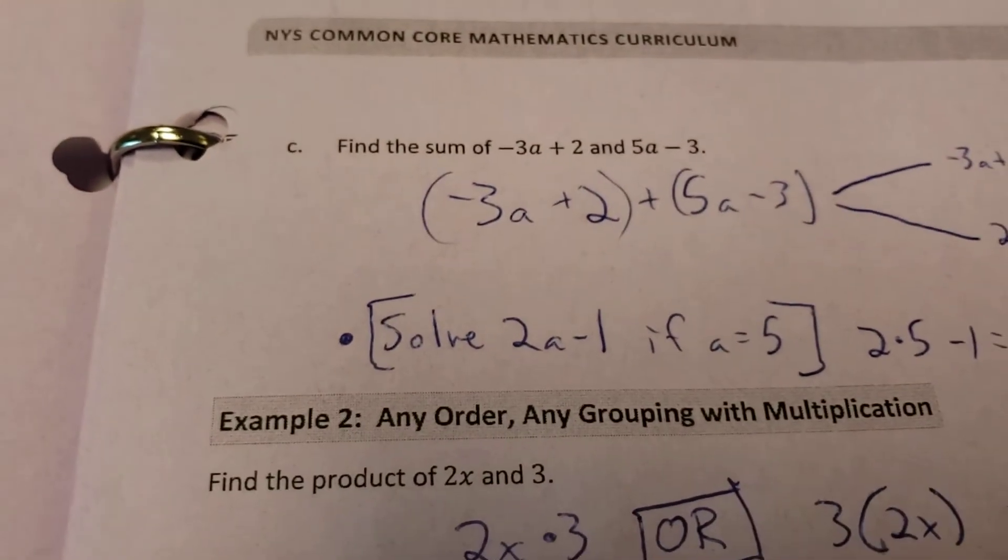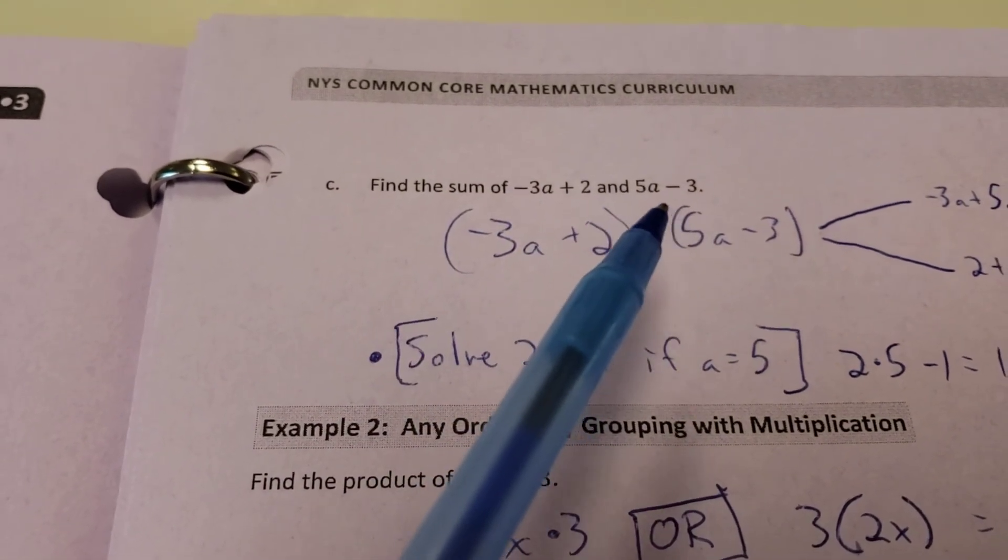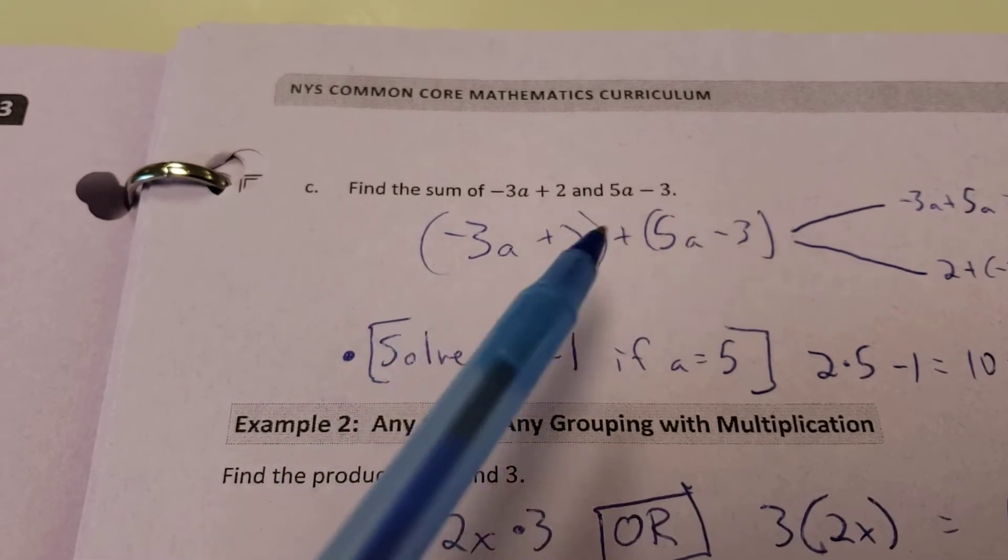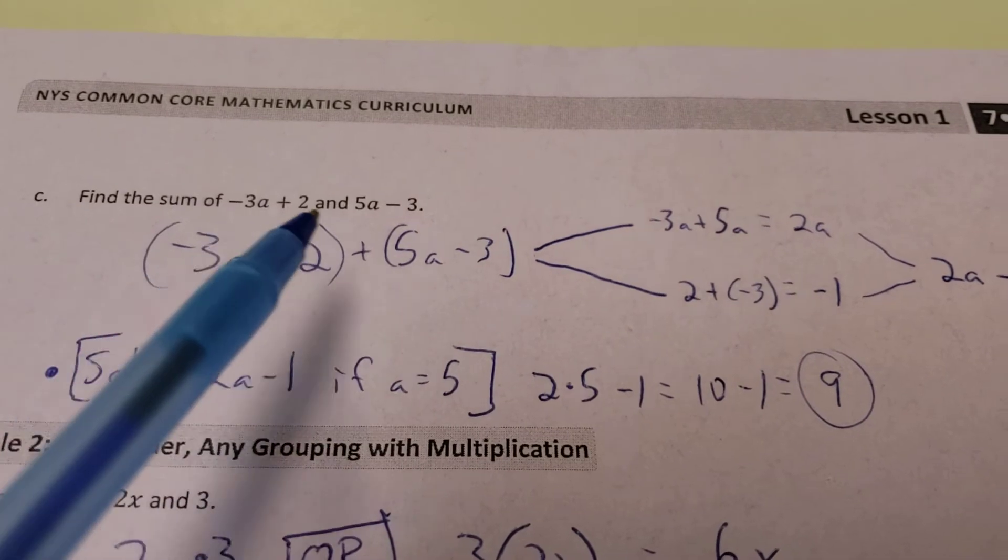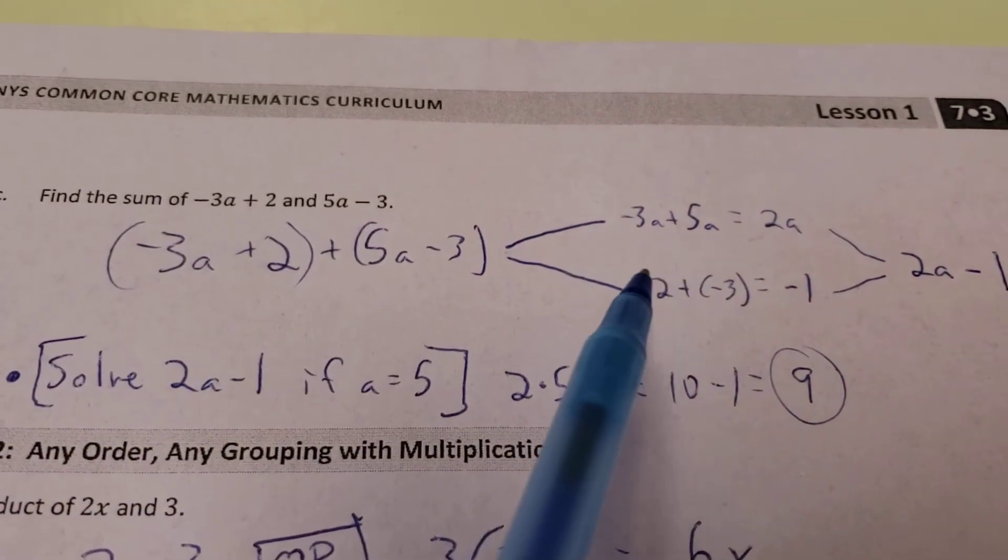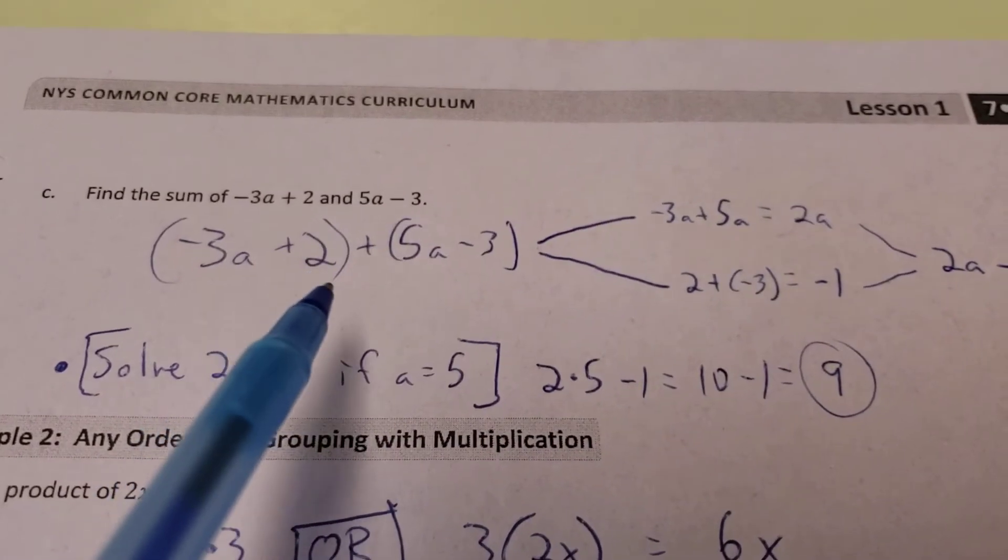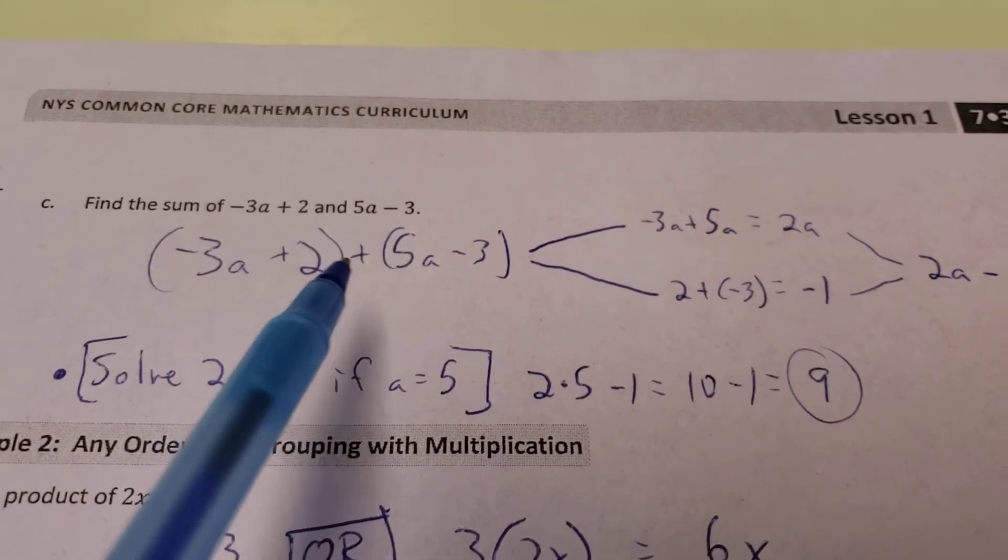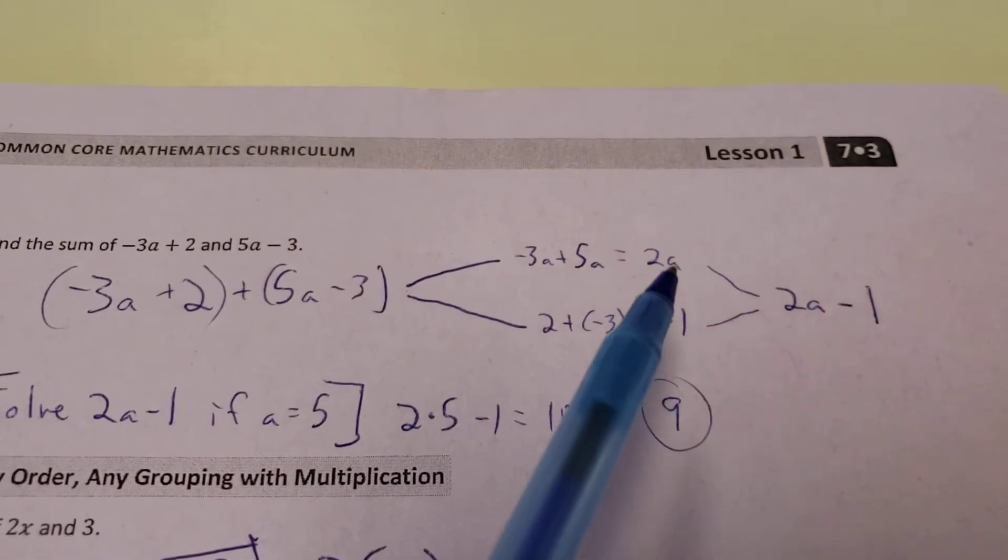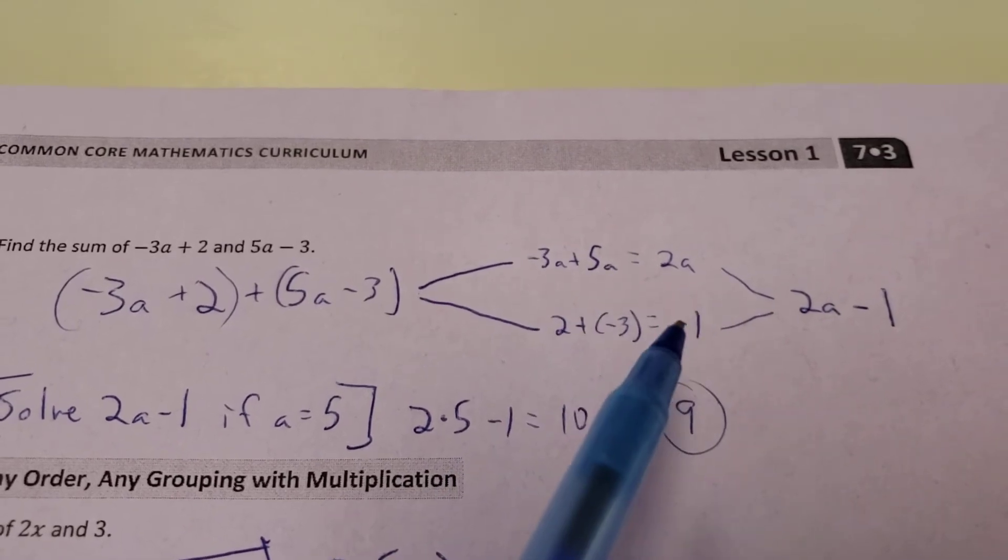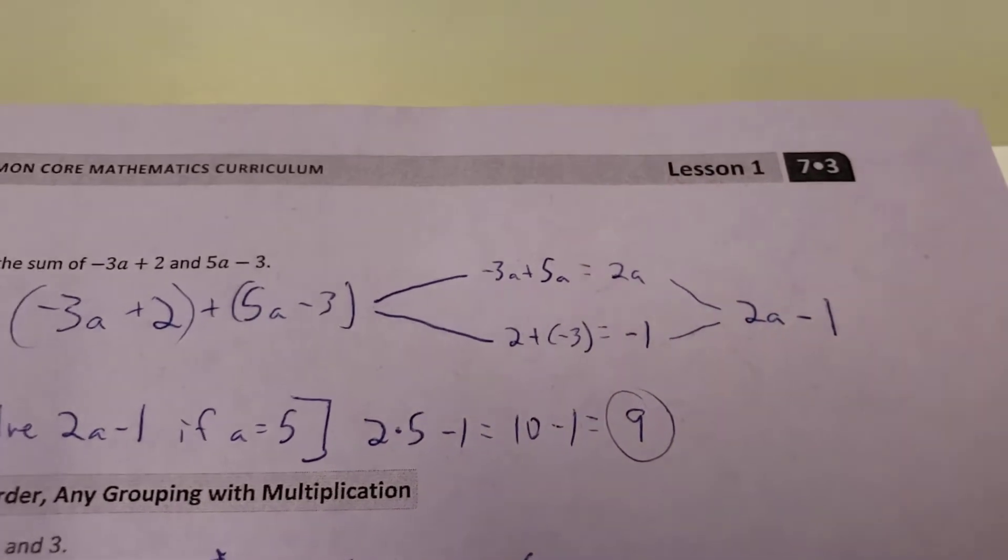Next up, top of page 3. Let's find the sum of negative 3a plus 2 and 5a minus 3. So I have this grouping plus this grouping. Let's deal with the a's first. If I have a negative 3a plus 5a, a negative 3 plus 5 gives me a positive 2 of the a's. Let's deal with the regular numbers now. So we'll keep those separate. 2 plus a negative 3, so 2 plus negative 3 gives me negative 1. So all the a's totaled up to 2a. Regular numbers total up to a negative 1. So 2a minus 1 or 2a plus negative 1, however you want to phrase that.